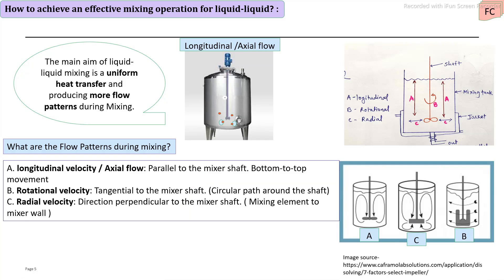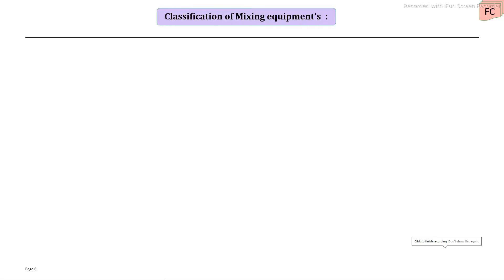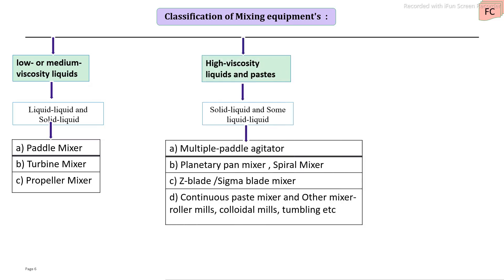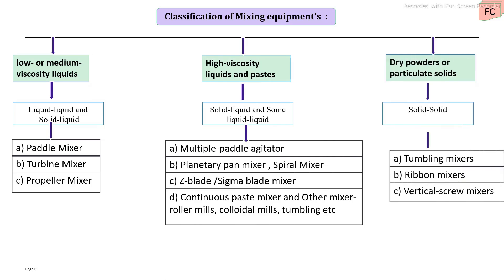Mixing elements are classified in different ways. The simplest classification is based on viscosity and properties of the material. The first group is for low or medium viscosity liquids, the second is for high viscosity liquids and paste-like materials, and the third is for mixing of dry ingredients.